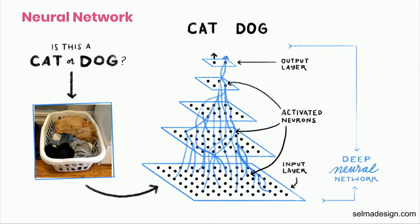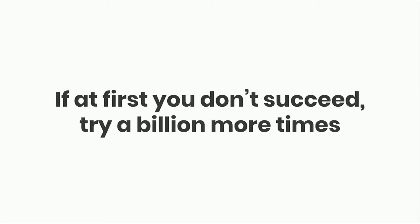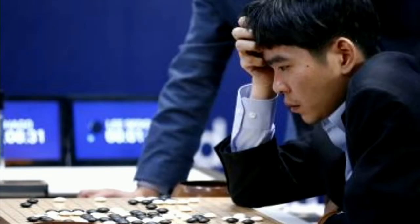This is all done through statistical analysis. One way of thinking about it is: if at first you don't succeed, try a billion more times. Artificial intelligence was recently used to beat one of the most incredible Go players in the world. At one point during the match, the AI made a move on the Go board that made no sense to any of the professional players there, but the AI ended up stomping on the world's most incredible Go players — which I thought was really, really cool.